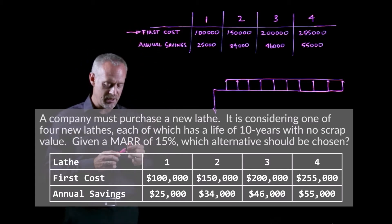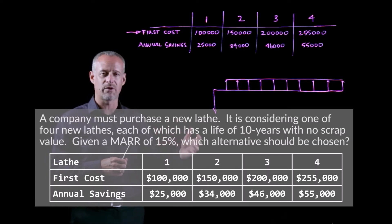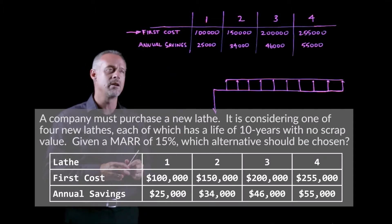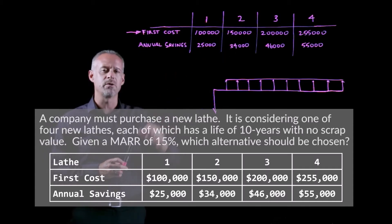The first cost may be the purchase price of the equipment, but it will also include things like installation, sometimes transportation. Many things are involved in that first cost. But this is the amount of money we have to invest at the beginning of each of these potential different projects to get that project going.